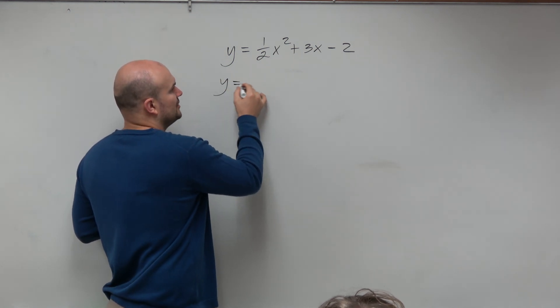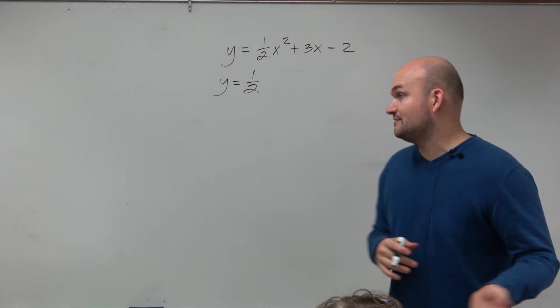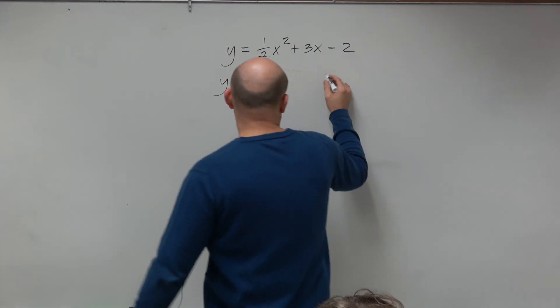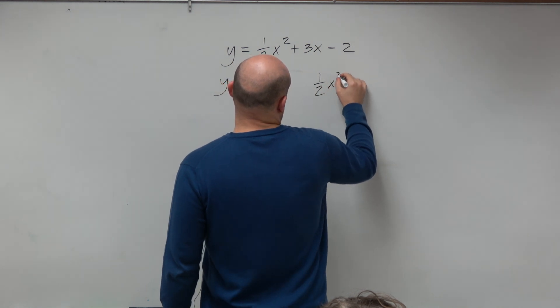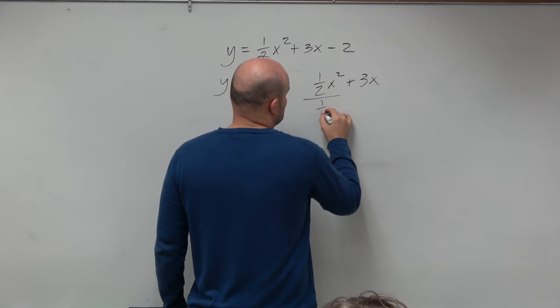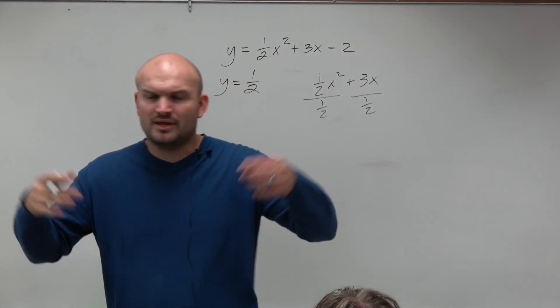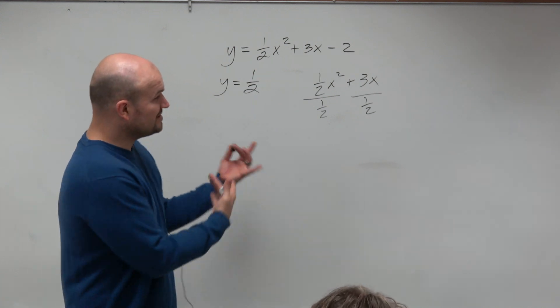So first thing I'm going to do is I'm going to factor out a 1 half. Factoring out a 1 half is just like dividing out a 1 half. It's really the same thing. So basically, I'm taking 1 half x squared plus 3x, and I'm dividing each of these by 1 half. That is the same thing as factoring out. But sometimes I throw in fractions, and people are like, this is the hardest problem in the world.